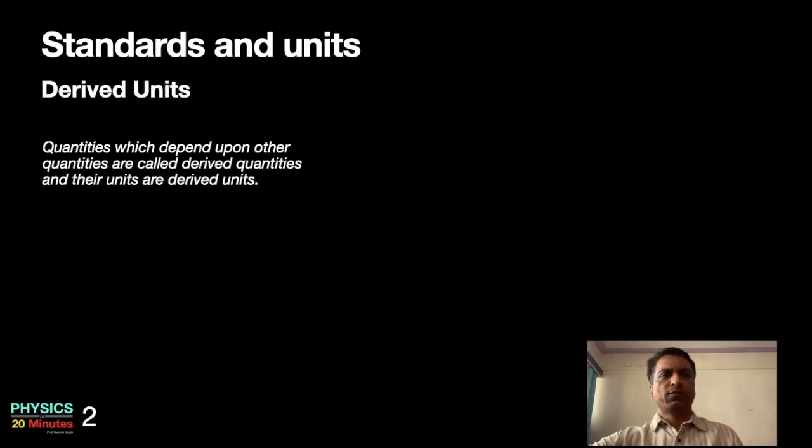What are derived units and derived quantities? Quantities which depend on other quantities are called derived quantities and their units are called derived units. There are a number of derived quantities and derived units. We will encounter them as we come across them. But let me put some examples to you.